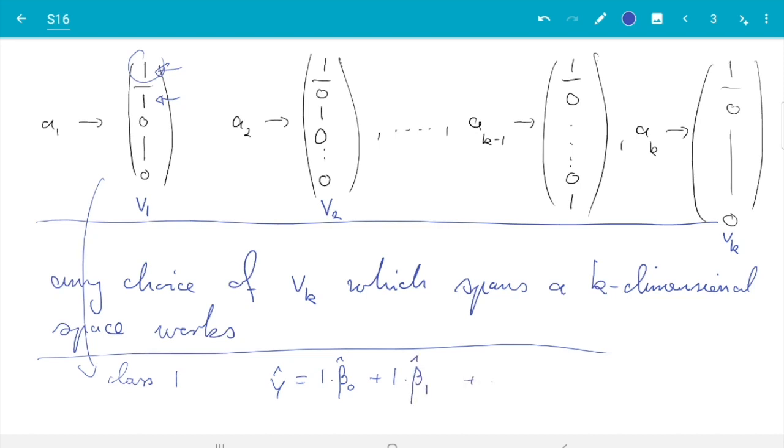Then if we have class 2, then we have y hat is still 1 times beta hat 0. But now we have 1 times beta hat 2, no beta hat 1. And then whatever other columns may be there.